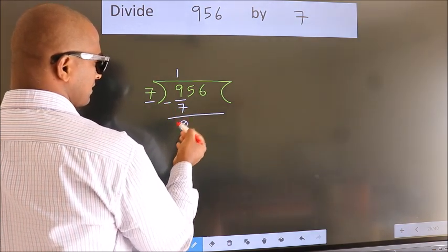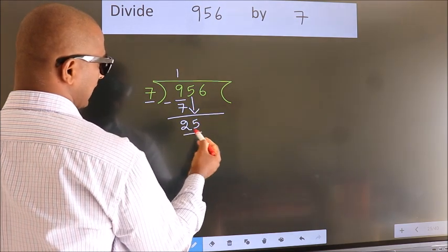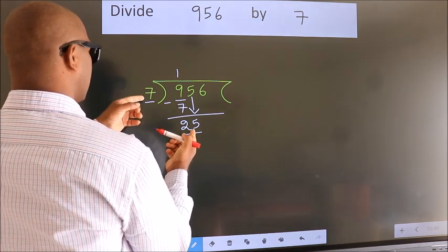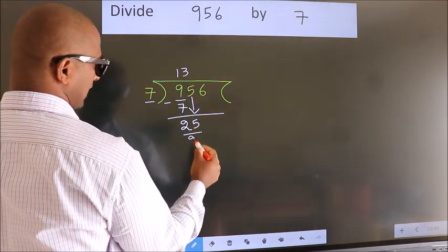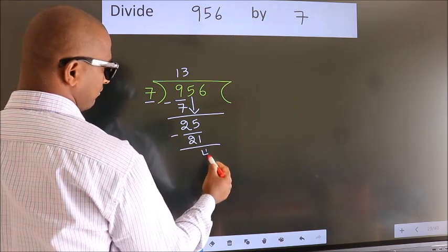After this, bring down the next number. So, 5 down. So, 25. A number close to 25 in the 7 table is 7 threes, 21. Now we subtract. We get 4.